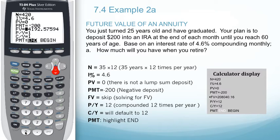We will skip future value for now and go to the compounding periods and the payments per year. In this case, compounding monthly, we get 12.